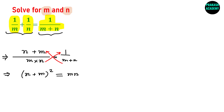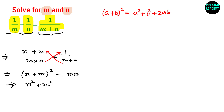Now we can use the formula A plus B whole square equals A square plus B square plus 2AB. Applying this, we get N square plus M square plus 2MN equals MN. Taking MN to the left side, this becomes M square plus N square plus 2MN minus MN equals 0, which simplifies to M square plus N square plus MN equals 0.